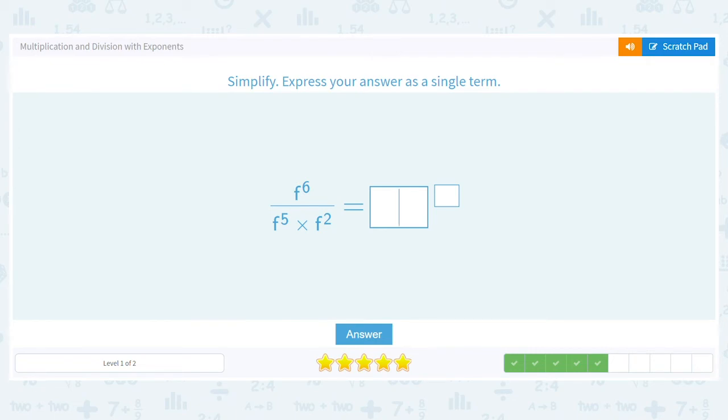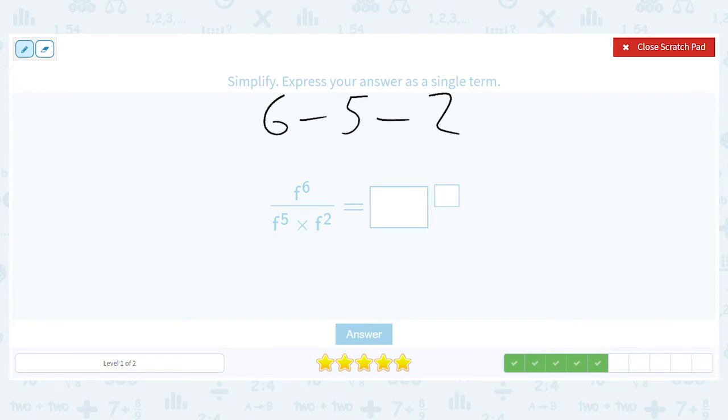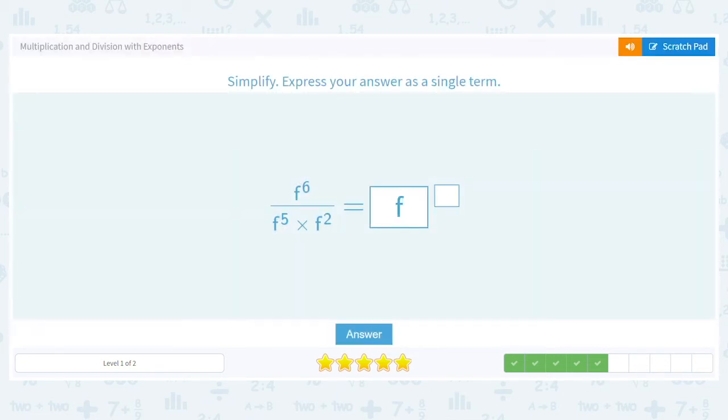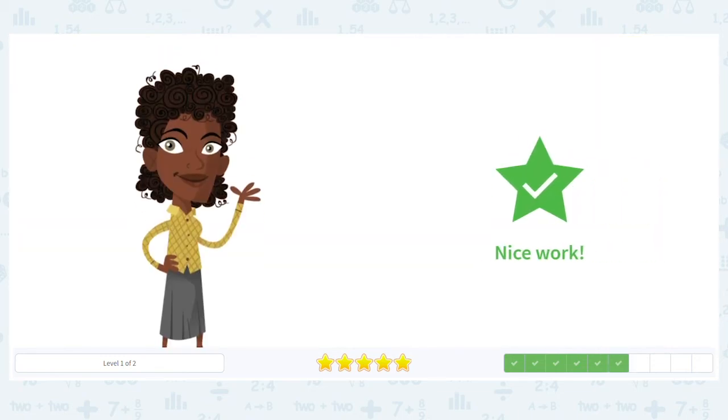How about this? We've got six minus five minus two, because the five and the two are in the denominator. So we're going to end up with something different here. We're going to end up with one minus two, which is negative one. So that's going to tell us that we have a negative exponent. So we end up with f to the negative first power. Nice work.